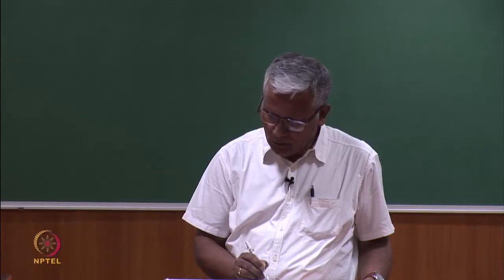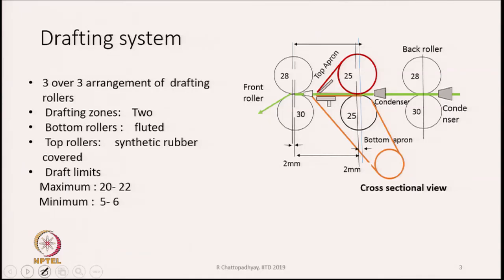In this slide, we are showing the cross-sectional view of a simple drafting unit where we have three pairs of rollers. It is known as a 3-over-3 arrangement — we have a back pair of rollers, a middle pair of rollers, and a front pair of rollers. When we have three pairs of rollers, we have two drafting zones.